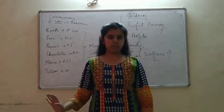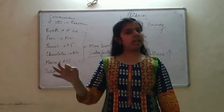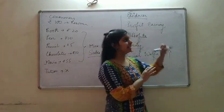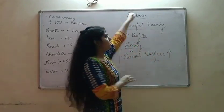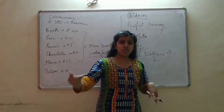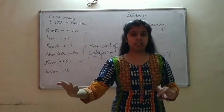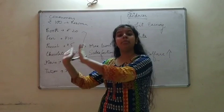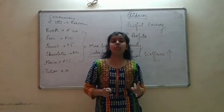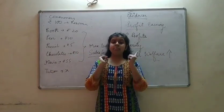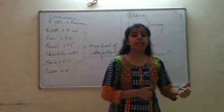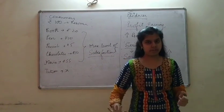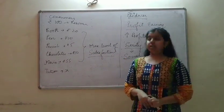Are you guys getting my point? Economics is all about these three basic categories: consumers, producers and society. What is the maximum social wealth of society? Let's revise the definition one more time.